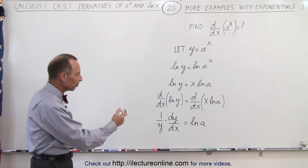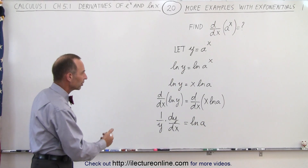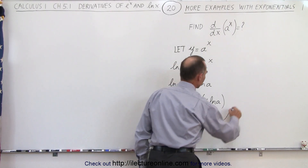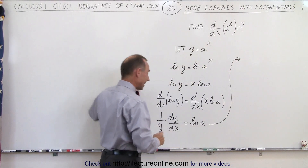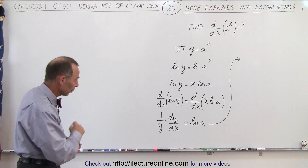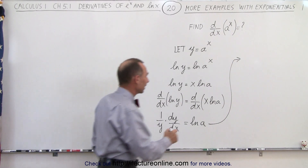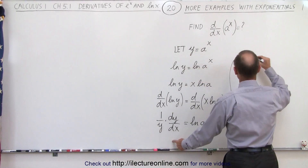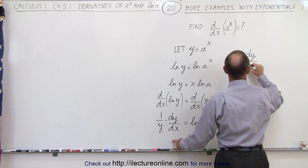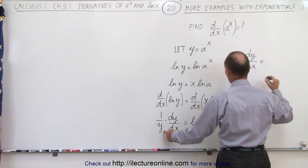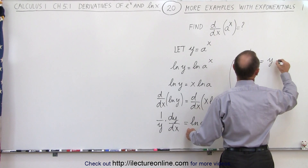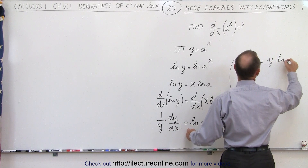Now if we cross-multiply the y to the other side, dy/dx is going to be equal to y times the natural log of a.